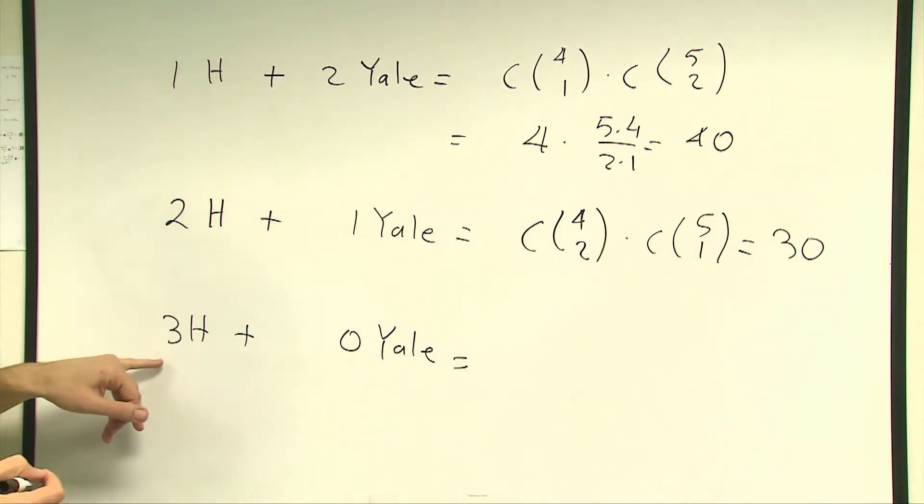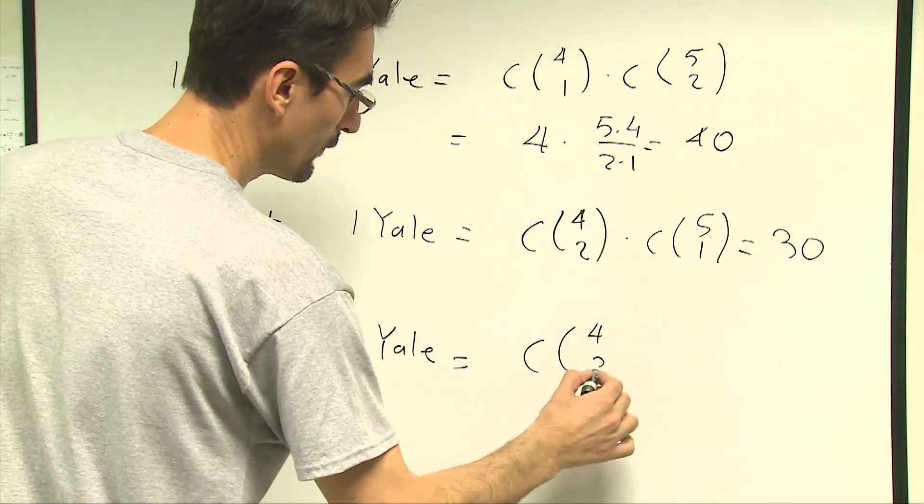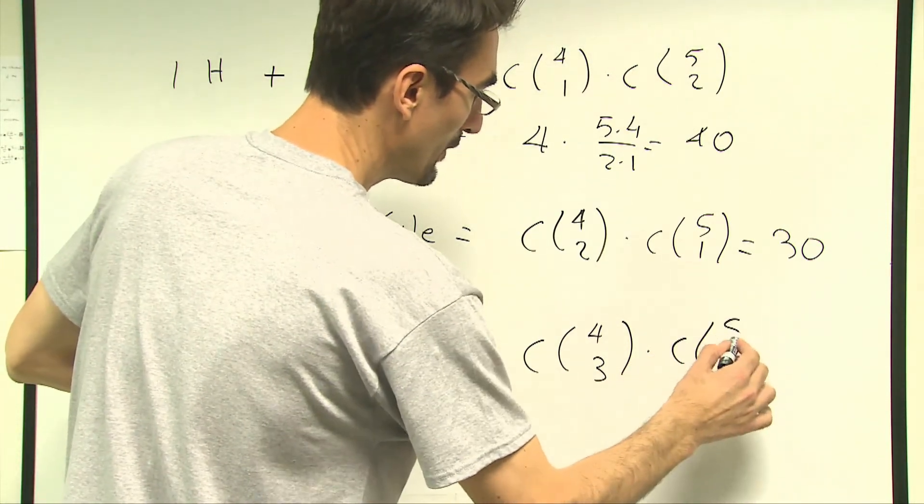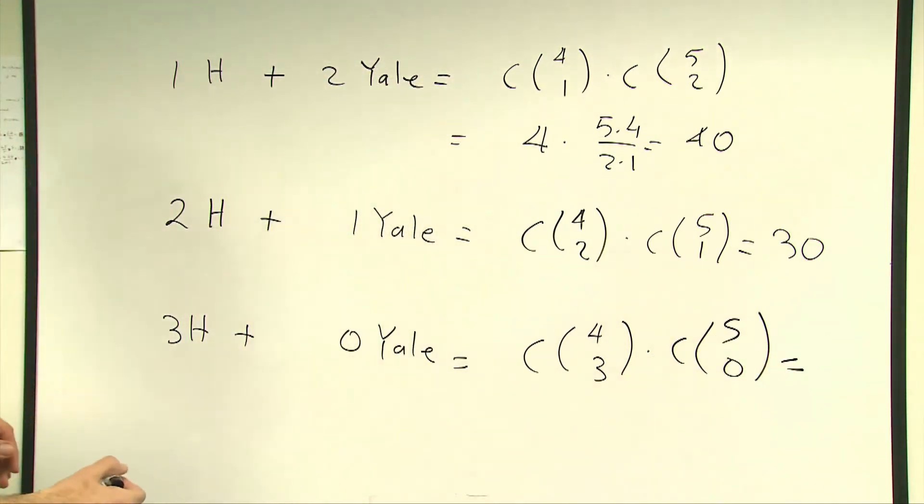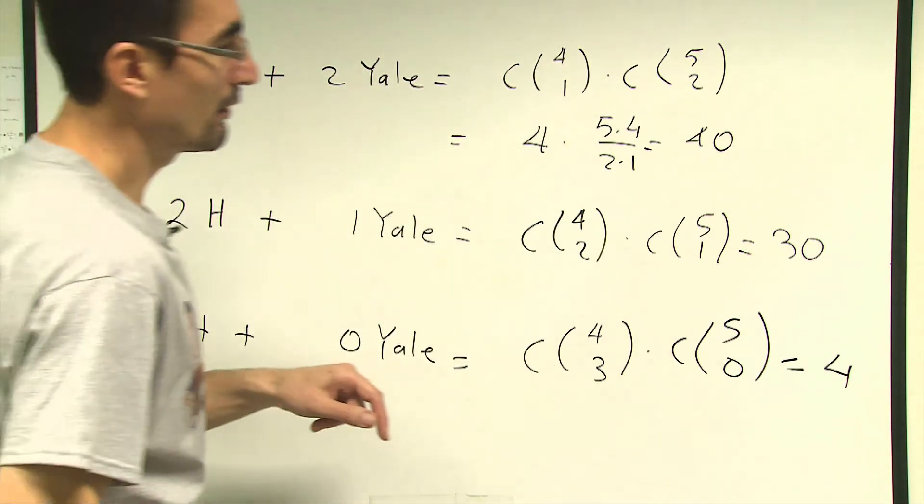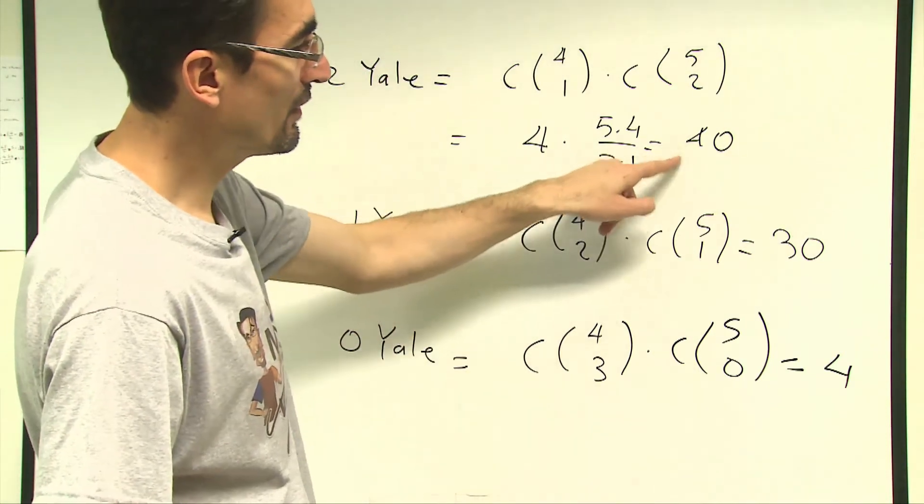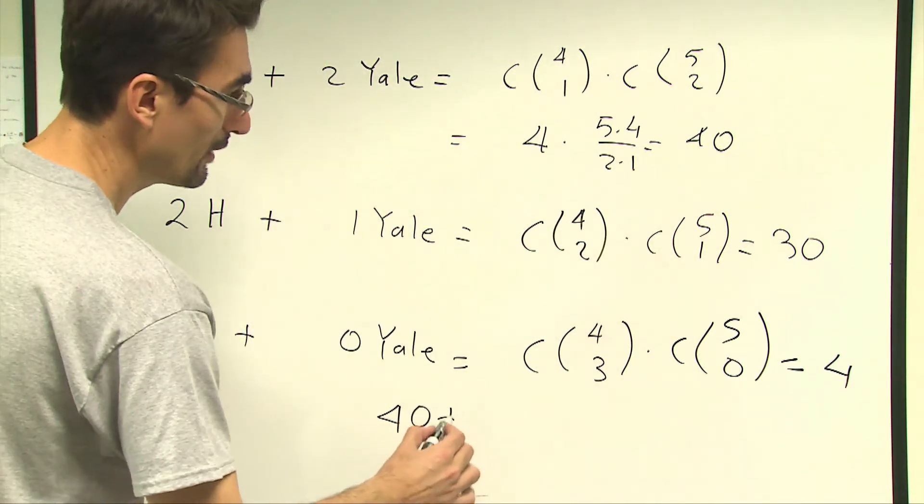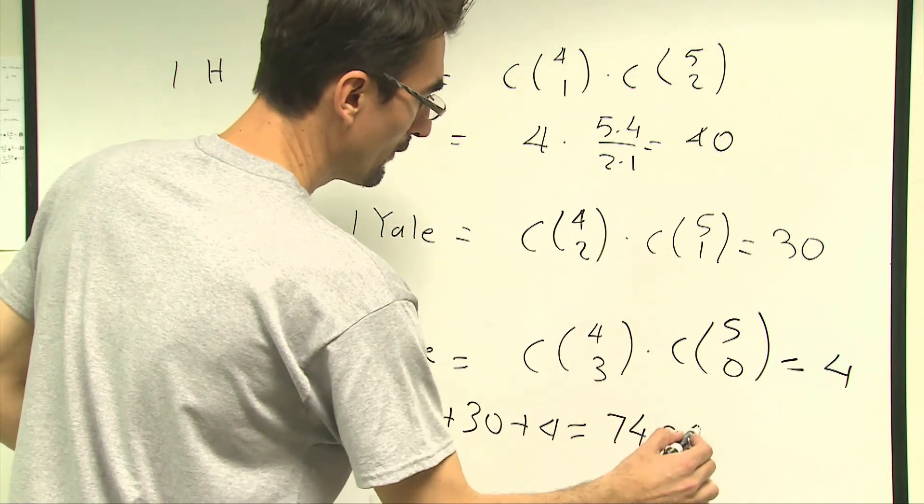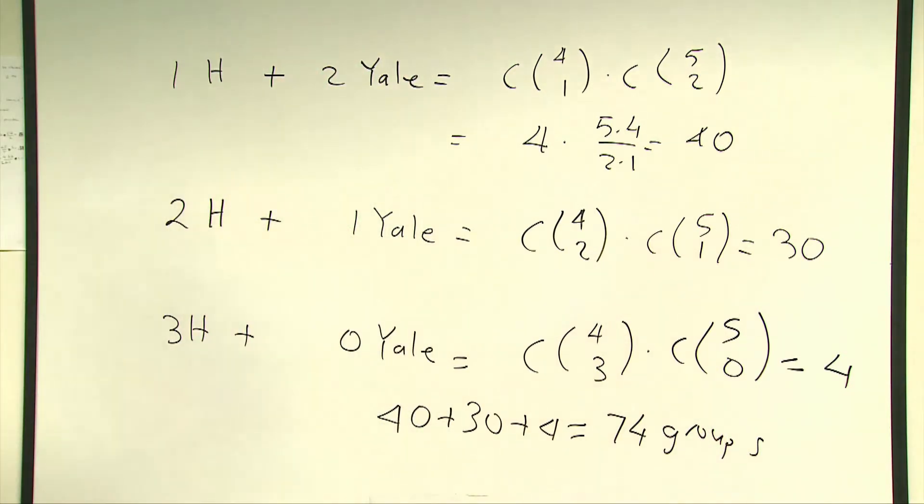And finally, choosing three Harvard professors out of four will be combination four choose three, and then choosing zero Yale will be combination five choose zero and in total is going to give us four groups. And finally, my answer will be adding these three groups which is 40 plus 30 plus 4 equal to 74 different groups that will have at least one Harvard.